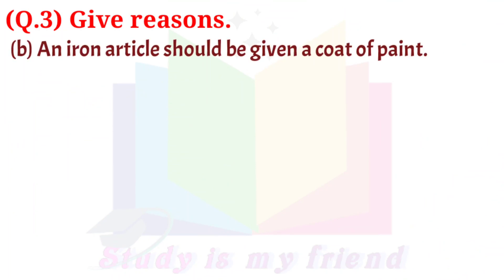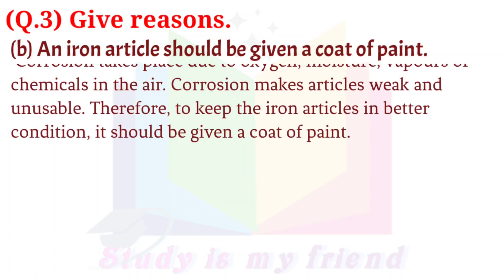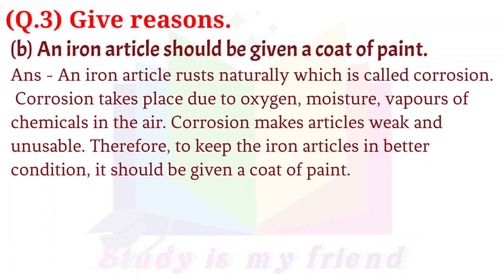B. An iron article should be given a coat of paint. Answer: An iron article rusts naturally, which is called corrosion. Corrosion takes place due to oxygen, moisture, and vapors of chemicals in the air. Corrosion makes articles weak and unstable. Therefore, to keep iron articles in better condition, they should be given a coat of paint.